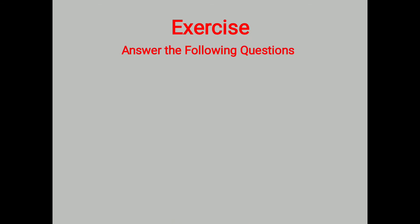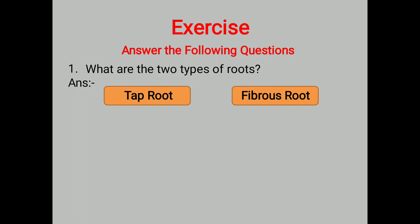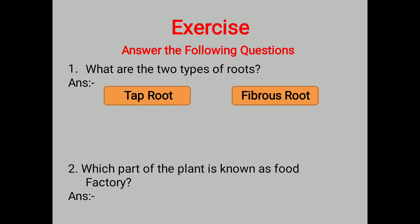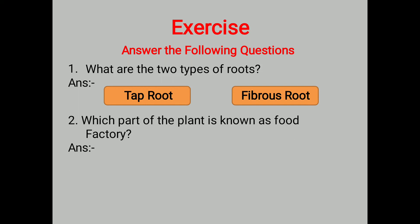Can you answer the following questions? My first question: what are the two types of roots? Yes — tap root and fibrous root. My second question: which part of the plant is known as the food factory of the plant? The answer is the leaf. Thank you very much. We'll see you again with a new topic on EVS. Goodbye and stay blessed.